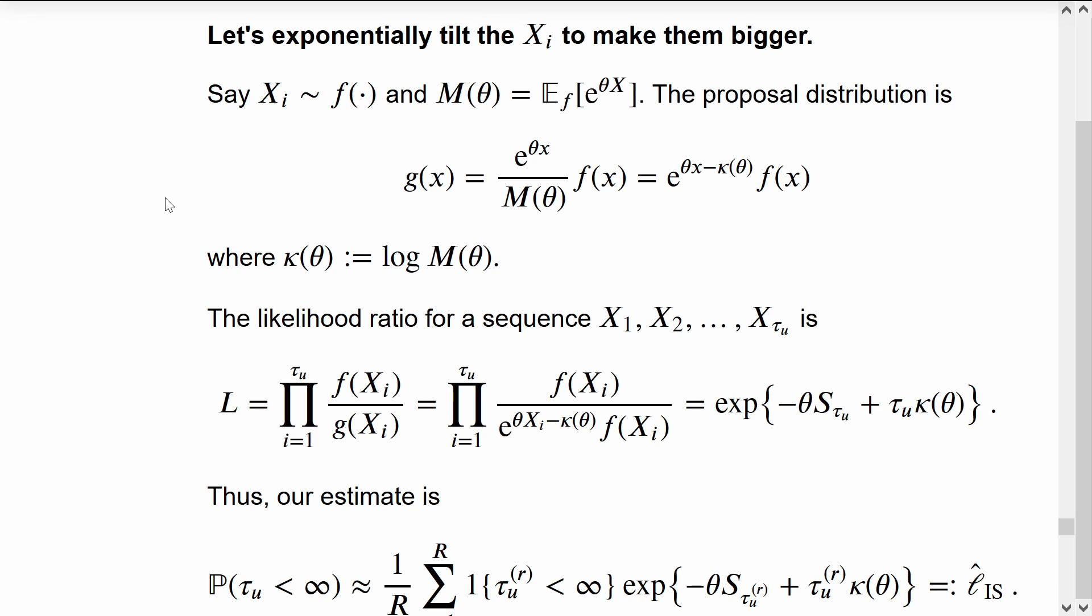Instead of simulating from the distribution F, we'll say that the X's are distributed according to a proposal of G, which is the exponentially tilted form of F. Here I give the notation for the moment generating function M and the cumulant generating function kappa.